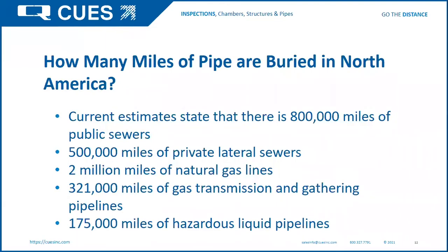How many miles of pipe are buried in North America? Current estimates state there are 800,000 miles of public sewers, a half million miles of private lateral sewers, 2 million miles of natural gas lines, 321,000 miles of gas transmission and gathering pipelines, and 175,000 miles of hazardous liquid pipelines. That's just the stuff we know about that we've actually put in there and inspected. Many miles of older pipe have failed or been replaced or rehabbed with coatings, cured-in-place pipe, or patches. All pipes require pre and post inspection using some form of CCTV camera inspection.